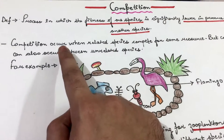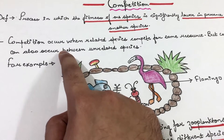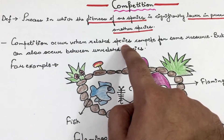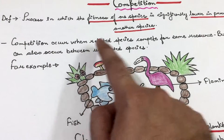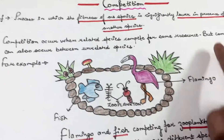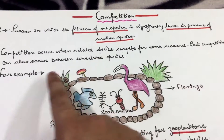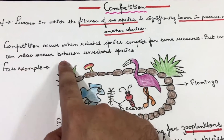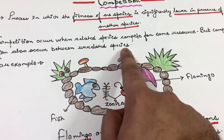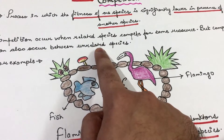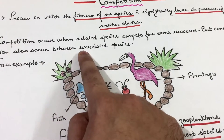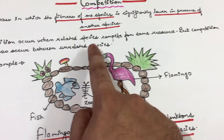Competition can occur between related species, but competition can also occur between unrelated species. Let us look at an example when competition occurs between unrelated species.